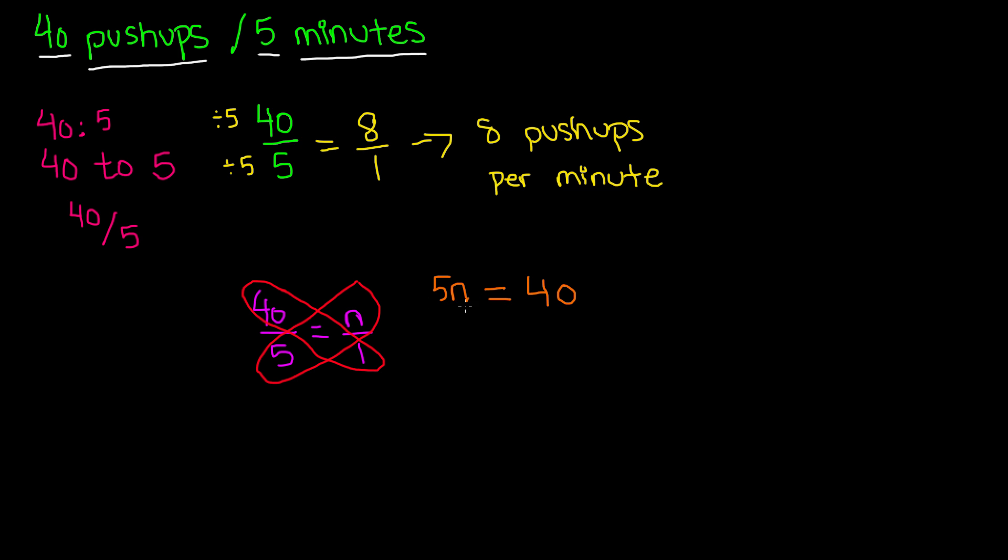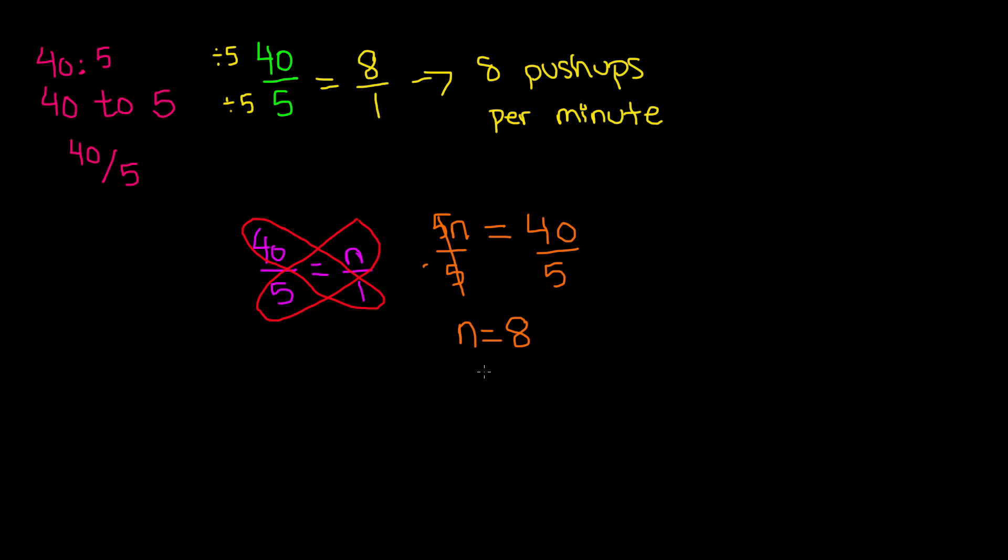Now we want to find the value of n, so we're going to have to isolate the variable, and we can do that by getting rid of any other operation that is being done to the n. In this case, n is being multiplied by 5, so we're going to have to divide by 5, use inverse operations. So the 5 cancels it out, and then we are left with n is equal to 40 divided by 5, which is 8. So that means, once again, the answer is the same, 8 push-ups per minute.